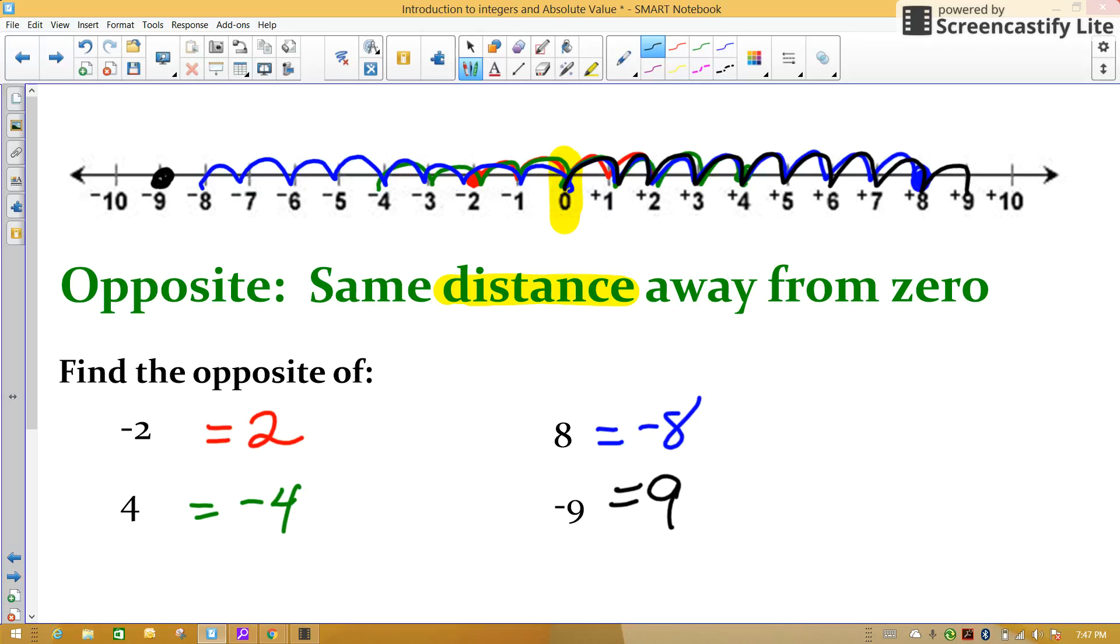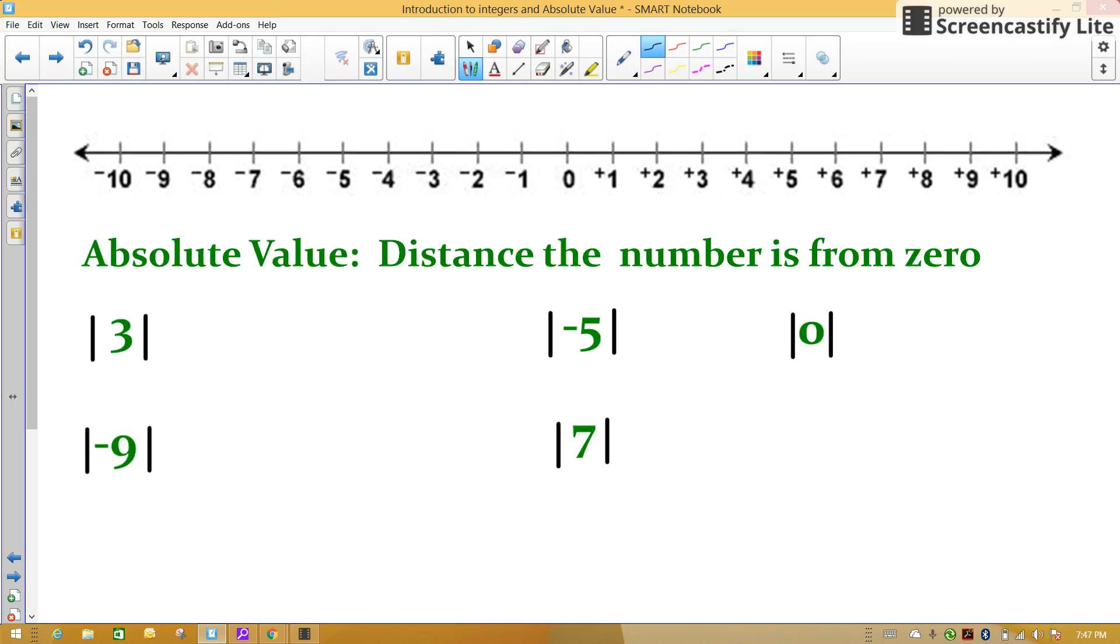Therefore, opposite is a distance measurement. That's important. Now let's talk about absolute value. Absolute value, again, is the distance a number is from zero. So find zero on your number line, and let's start counting how many spaces.